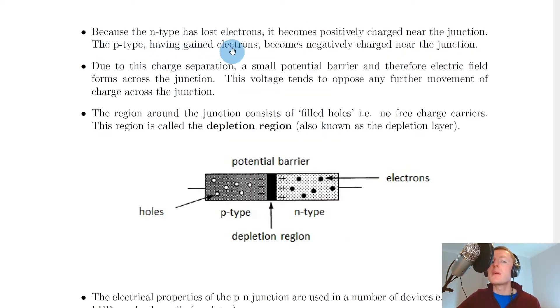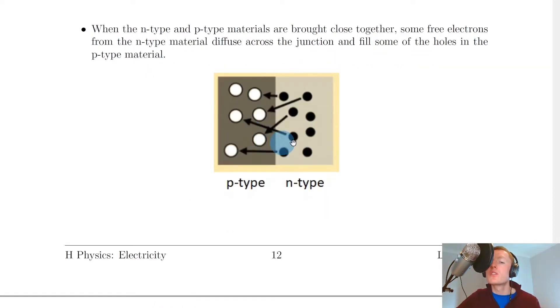Because the N-type has lost electrons, it becomes positively charged near the junction. The P-type having gained electrons becomes negatively charged near the junction. If we go back to this picture, because electrons have started filling holes at this point in the P-type, then this part becomes more negatively charged. So this side will have a negative charge built up.